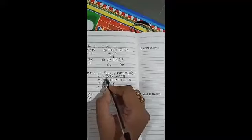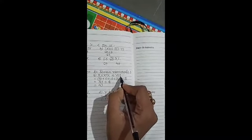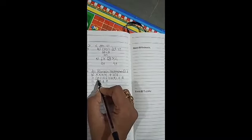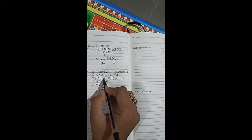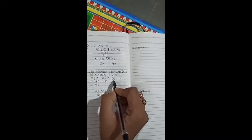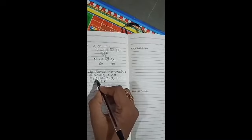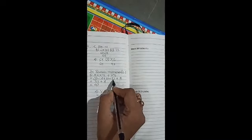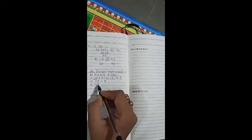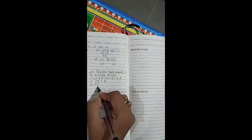B. XXXIX plus VIII. Here, X means 10 plus 10 plus 10 plus IX means 9. And, VIII means 8. Here, 10 plus 10 plus 10 plus 9 means 39 and plus 8. So, 39 plus 8. This is 47.